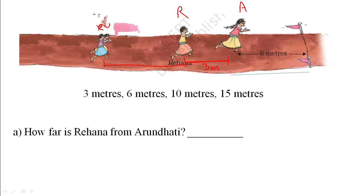Now look at Rehana and Uma. The distance between Konkana, Uma, and Rehana seems equal to the distance between Arundhati and the finish line, so that is again 6 meters.